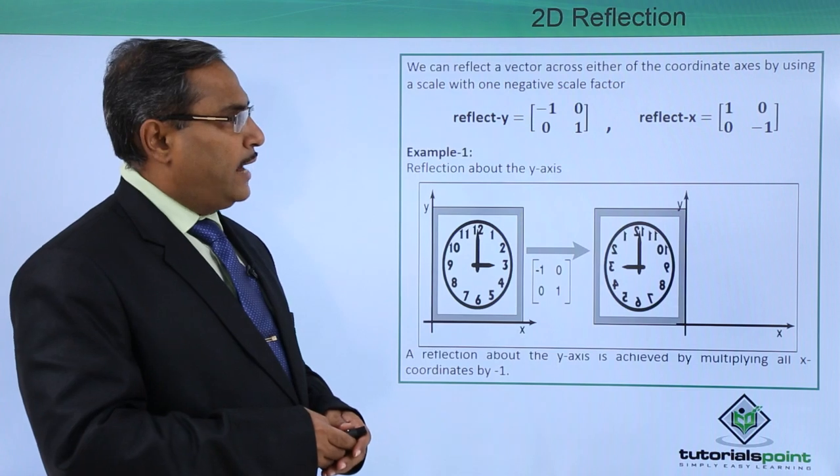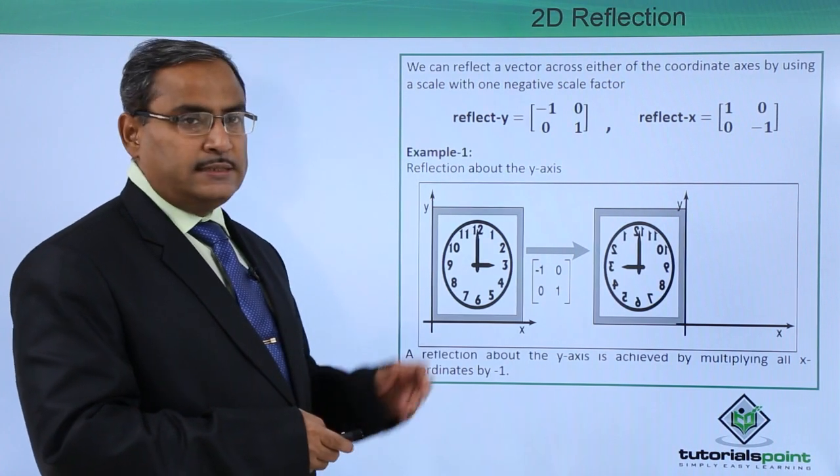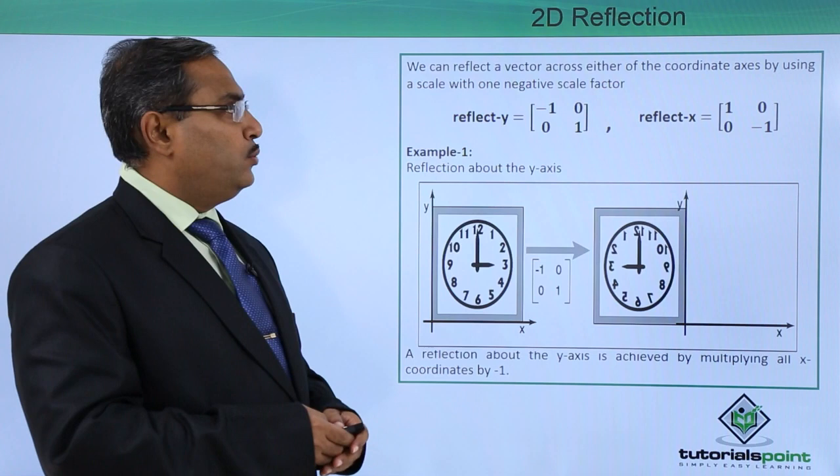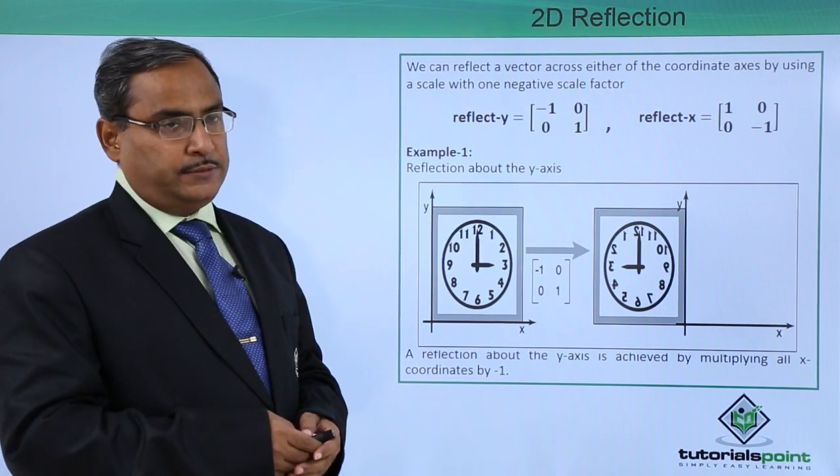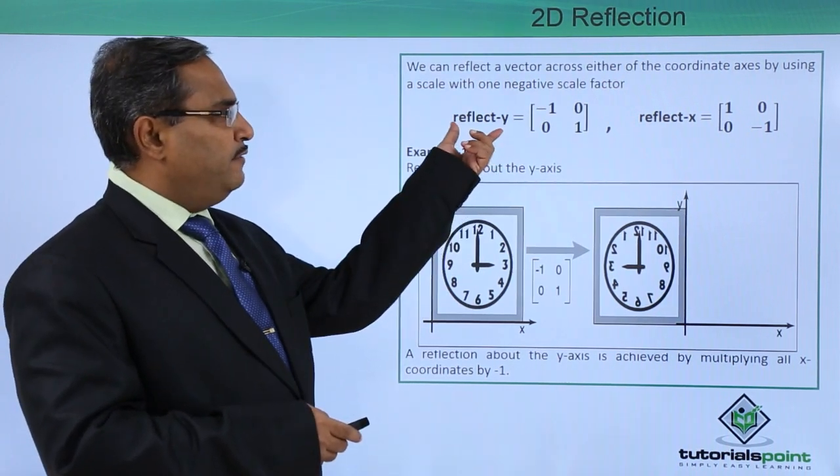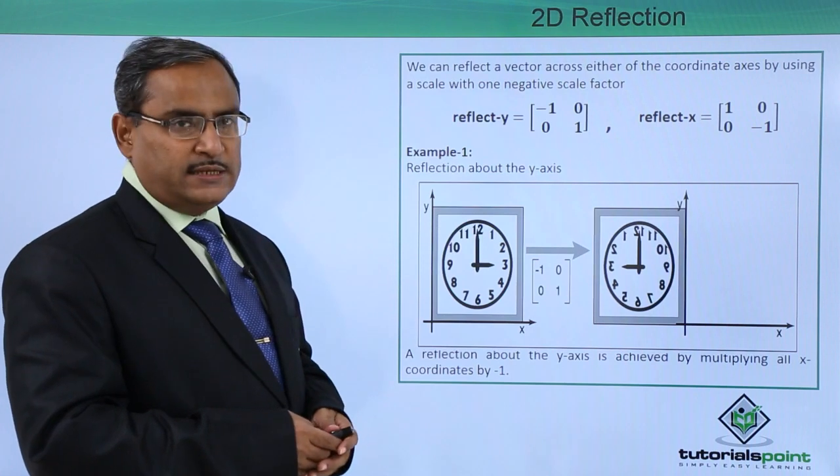We can reflect a vector across either of the coordinate axes by using a scale with one negative scale factor. If we consider this reflection along the y-axis, just consider this one.